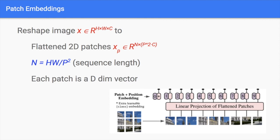Think about it: before reading this paper, could you come up with the idea to break down an image this way? I think the most important lesson is how to use existing technology to solve problems that weren't previously solved by that technology. Transformers were always there, but not many people really applied transformers to computer vision, and that's why they can be successful.